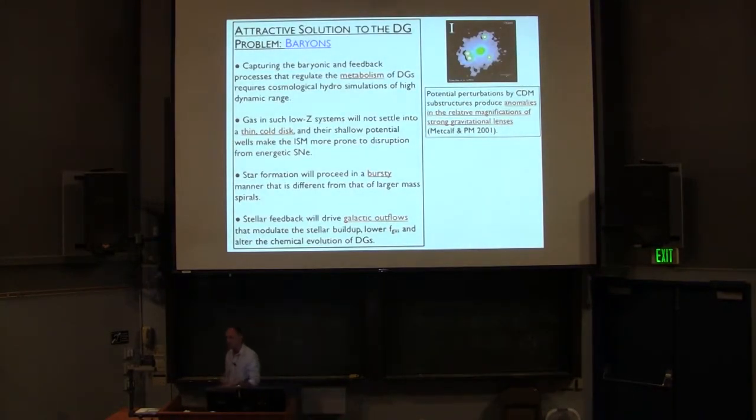An attractive solution to all this problem involves baryons. You heard it already in the previous talk. The advantage of using baryonic processes is that we don't have to change the properties of the dark matter. Every time we do that, we have to add a free parameter like a cutoff in the power spectrum or a self-interacting cross-section. The problem is capturing the baryonic and feedback processes which regulate the metabolism of the dwarf galaxies. It's hard. It takes high resolution simulations. You expect gas in such low metallicity system never to settle down into a thin disk, a thin cold disk, and that means the shallow potential well of this system will make the ISM more prone to disruption by supernovae. If that's the case, you expect star formation to be bursty, and that's a process you would like to reproduce.